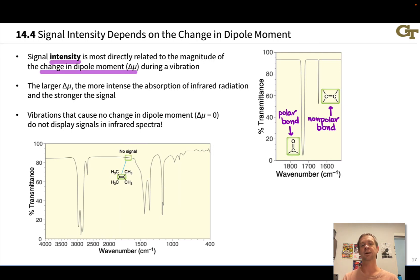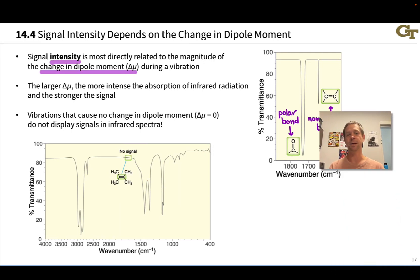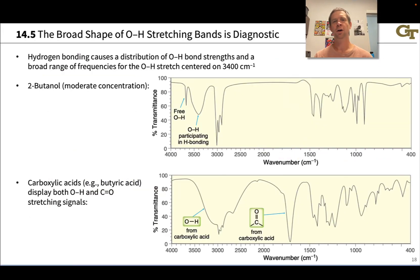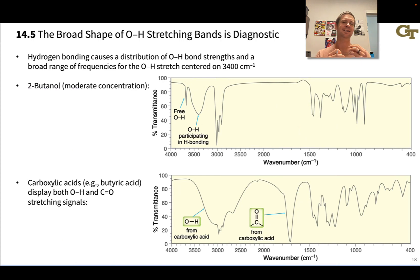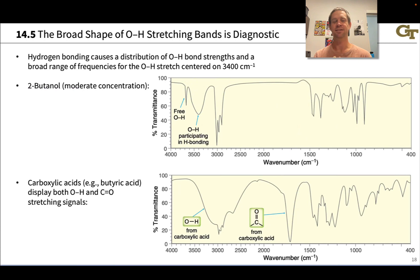More generally, vibrations that cause no change in dipole moment — because they are symmetrically disposed or involve perfectly nonpolar bonds — do not display signals in infrared spectra. When it comes to the shape of an infrared signal, the broadness of the signal depends on the diversity of electronic environments that the stretching bond can find itself in. Hydrogen bonding is an extremely common source of broadening.